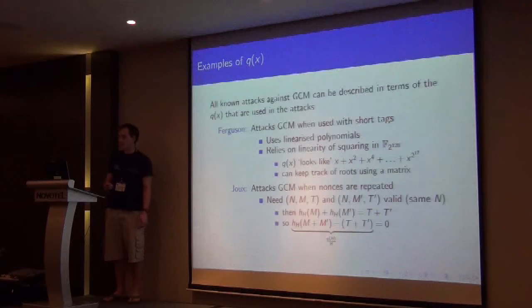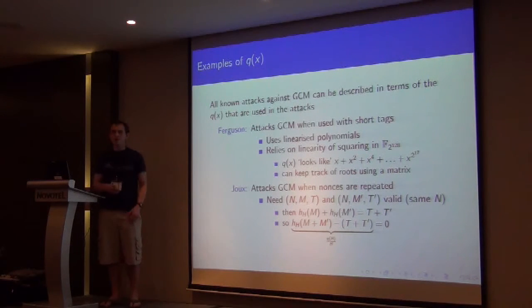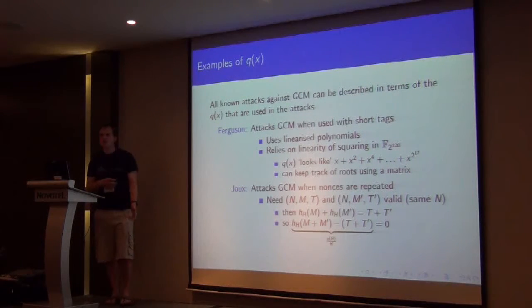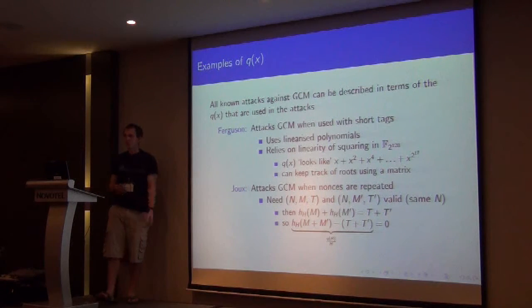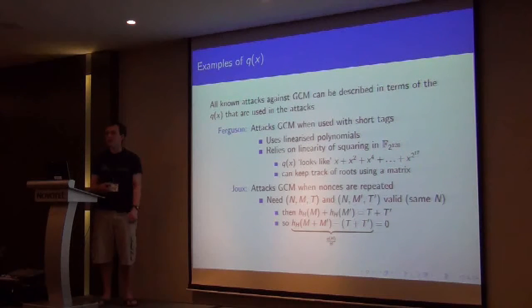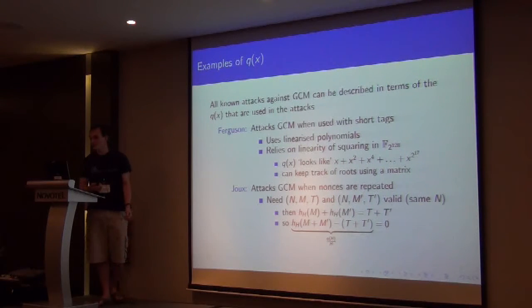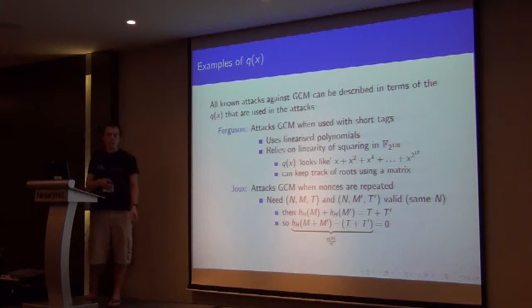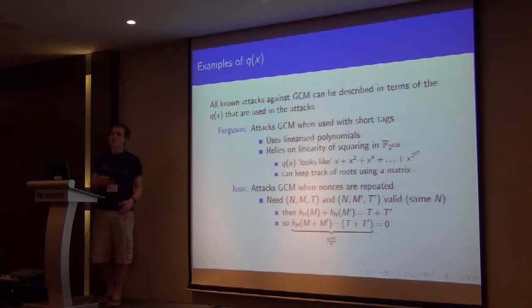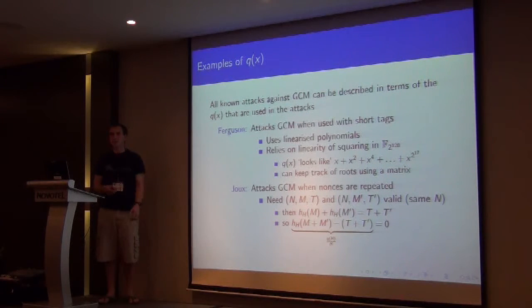So we've written down a sort of simple method for finding our forgery polynomial. Actually all of the current attacks against GCM are defined in terms of the polynomials that they're using. So Ferguson's attack on GCM if we use short tags relies on using linearized polynomials and squaring the linear in this field of characteristic two. So q of x looks a bit like this polynomial. There might be some different coefficients, but it still has the same structure. This is nice because we can keep track of the field elements that are still possible hash keys using a big matrix.